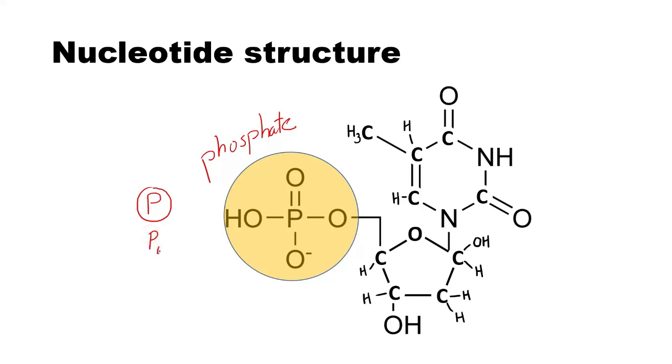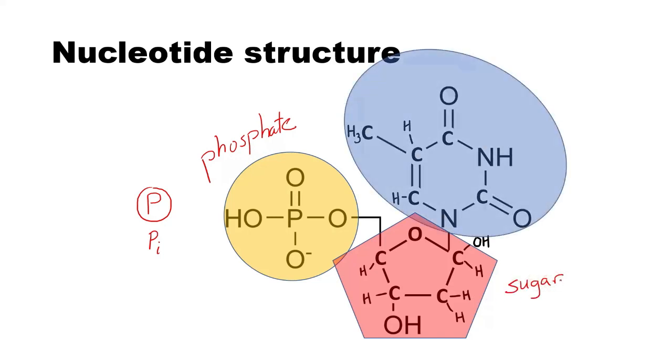Sometimes you'll even see a P with a little i by it, meaning inorganic phosphate. Next we have this sugar, a deoxyribose sugar. And then finally the most important part is this nitrogen base.